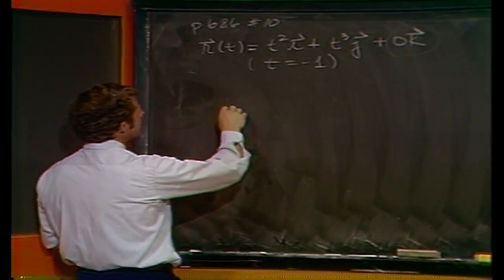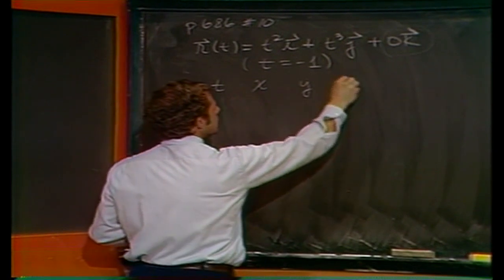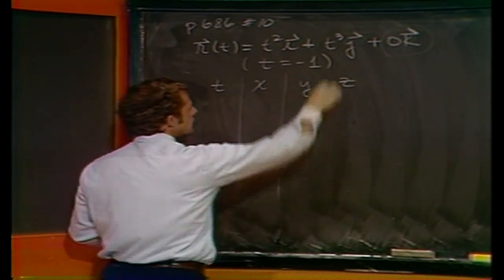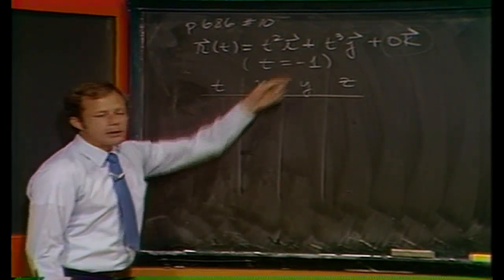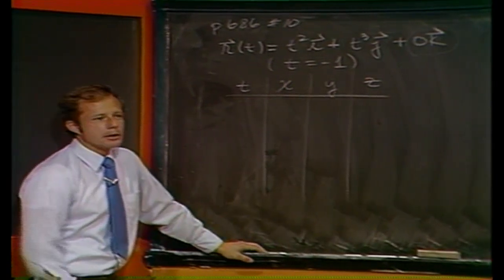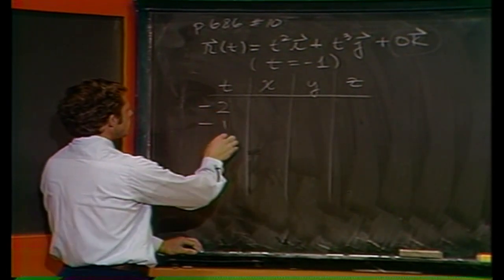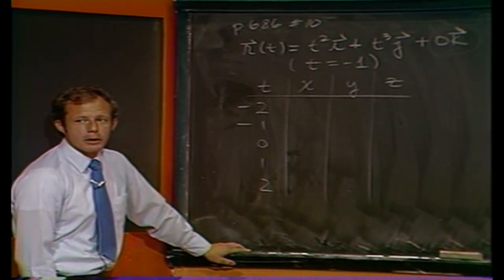Now for sketching purposes, again I think this is what the book has in mind. Remember all your z's are zeros. Just plug in some numbers. Now since we're interested at t equals minus 1, I suspect we should stick near the origin. Let's try minus 2, minus 1, 0, 1, 2, and a few more points if it's not apparent what's going on.